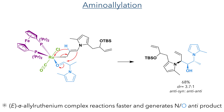A bond is formed between the alkene and the aldehyde while a beta-hydride elimination also occurs, breaking the carbon-ruthenium bond and forming a terminal alkene. This formed the product in a 68% yield with a 4:1 dr. This stereochemical preference can be attributed to a difference in reactivity of the different conformations of the ruthenium complex. The reaction occurs much faster when there is an E relationship between the carbon-ruthenium bond and the carbon-carbon double bond.